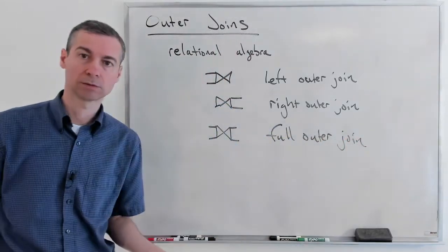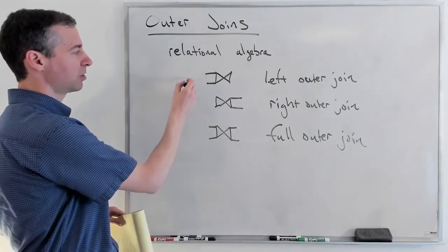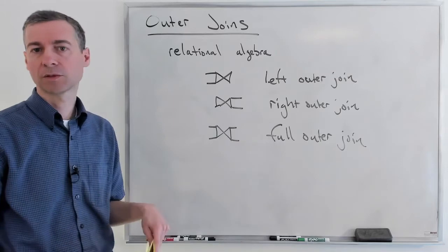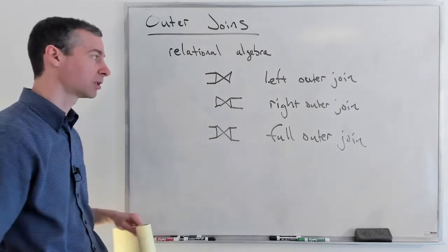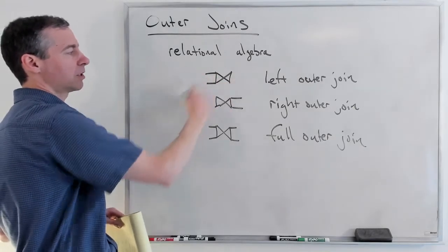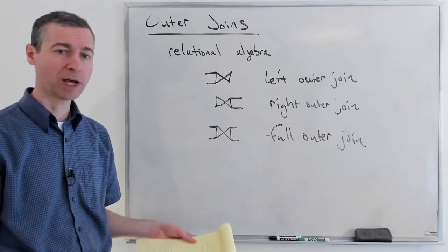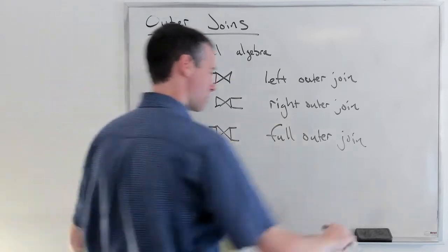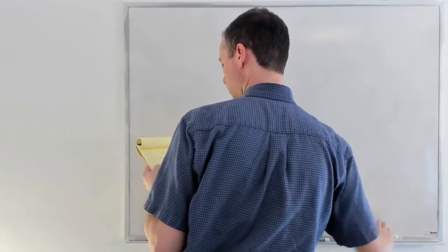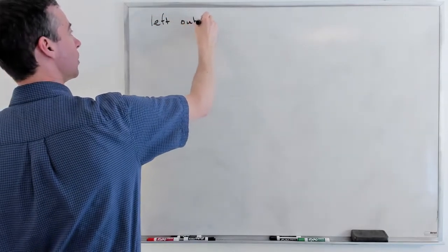The best way to start to understand this is — we're going to end up having a relation on one side and a relation on the other side, just like we did when we used the bowtie as a theta join or as a natural join. It's going to operate on two relations and produce a new relation. I'm going to demonstrate and talk about it with regard to a left outer join, which is first on the list.